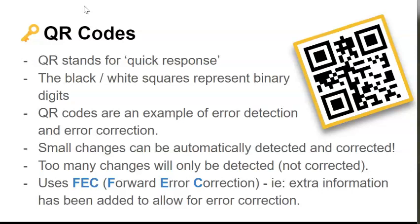QR codes give us an example of error detection and correction. It's possible to make small changes to those white squares, either making a black square white or a white square black, and when we scan it, the code will still work. This is because those small changes are automatically detected and corrected. Of course, changing too many of those squares means that the QR code won't scan successfully, so we then have error detection but no error correction.